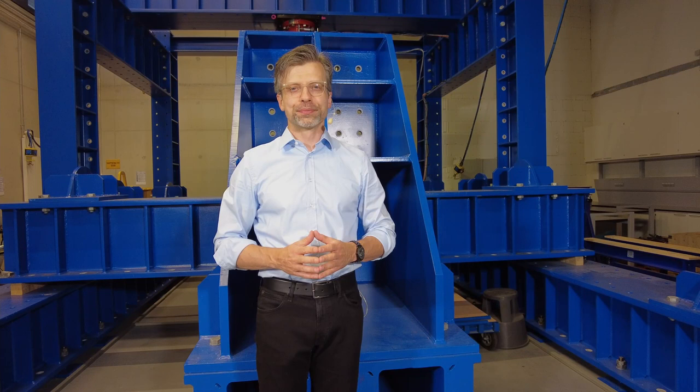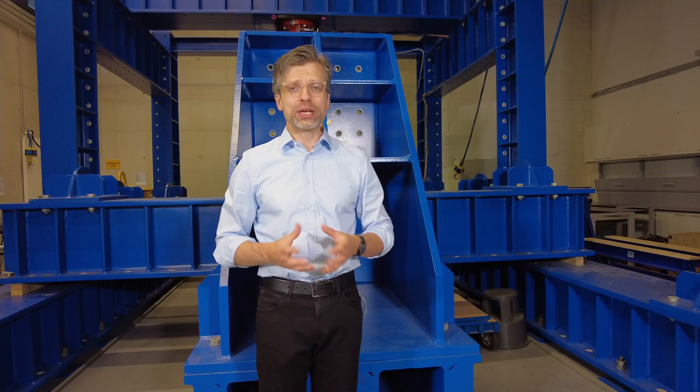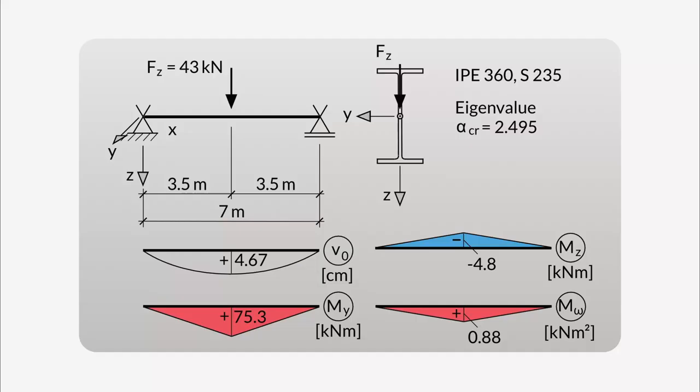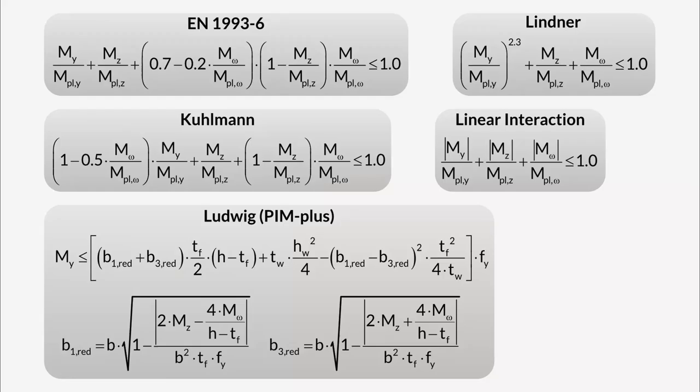For a calculation according to the second order theory, including an equivalent bow imperfection, two bending moments and a warping moment will regularly occur. So, three internal forces and moments have to be taken into account within the interaction condition. An interaction condition considering warping moment is not available in Eurocode 3 part 1.1.